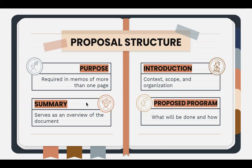Following the purpose statement, you'll have an executive summary. This serves as an overview of the entire document. It needs to be clear, concise, and succinct, but it needs to include a snapshot of the entire document so that the reader feels like they've read the entire document without having to read it. You do want them to read it, however.